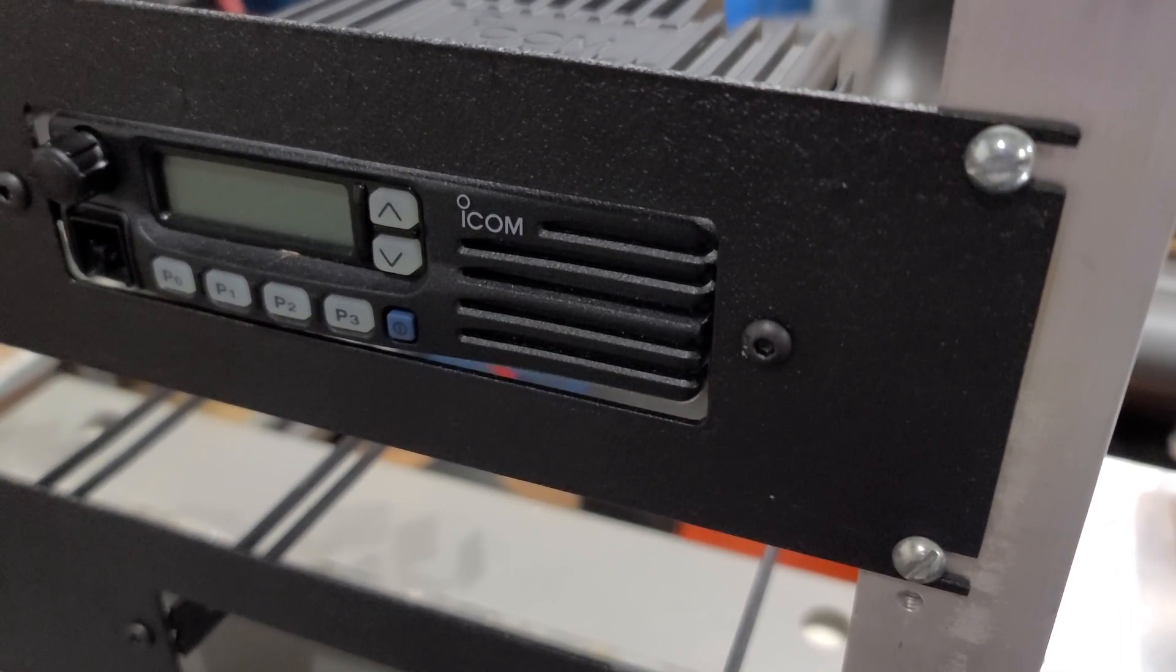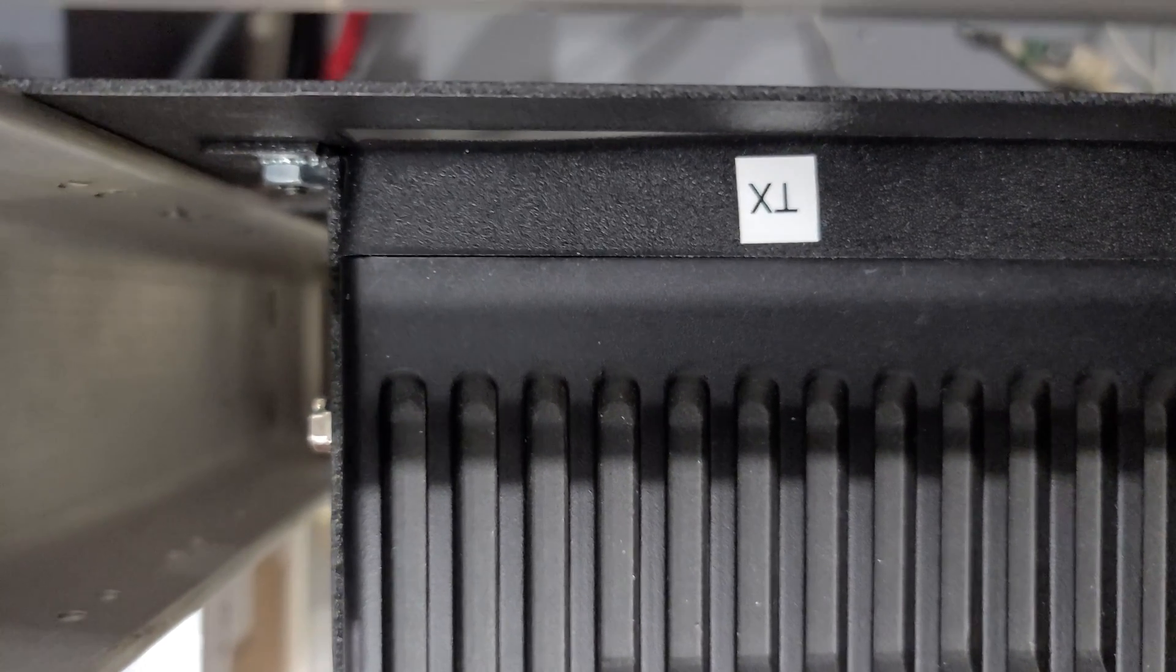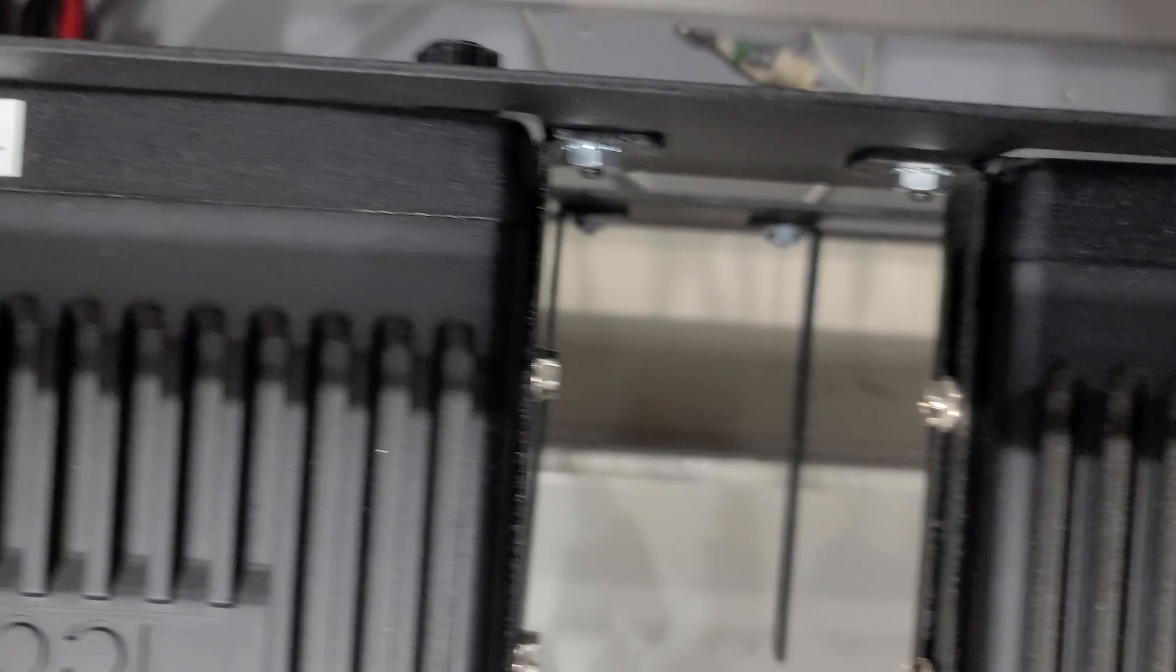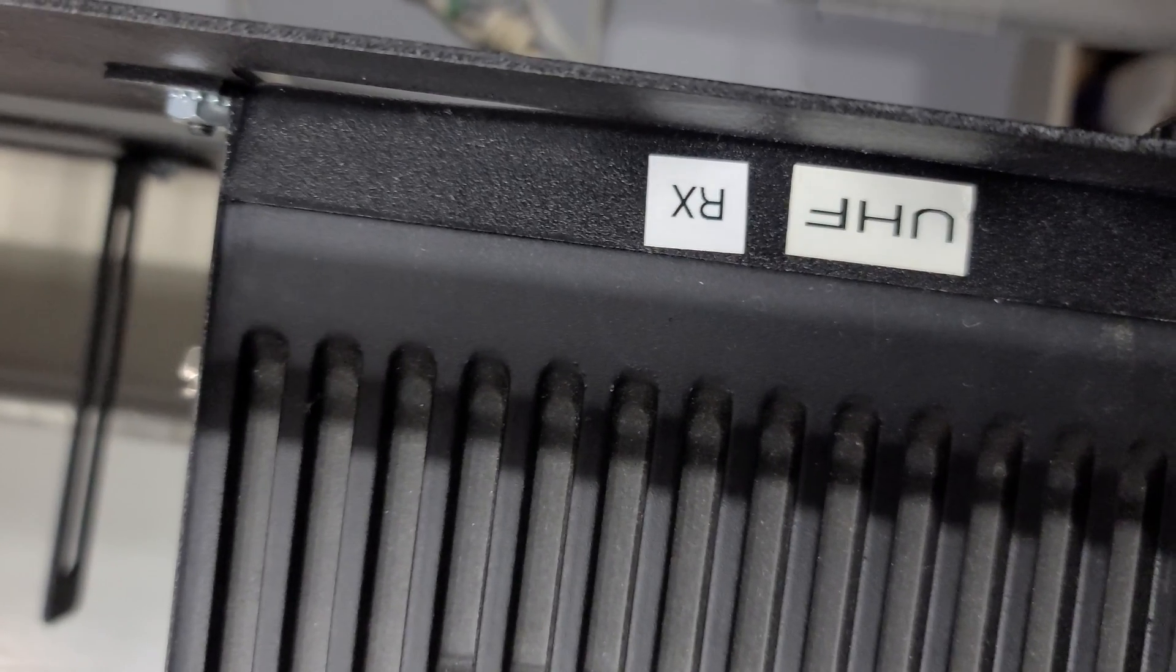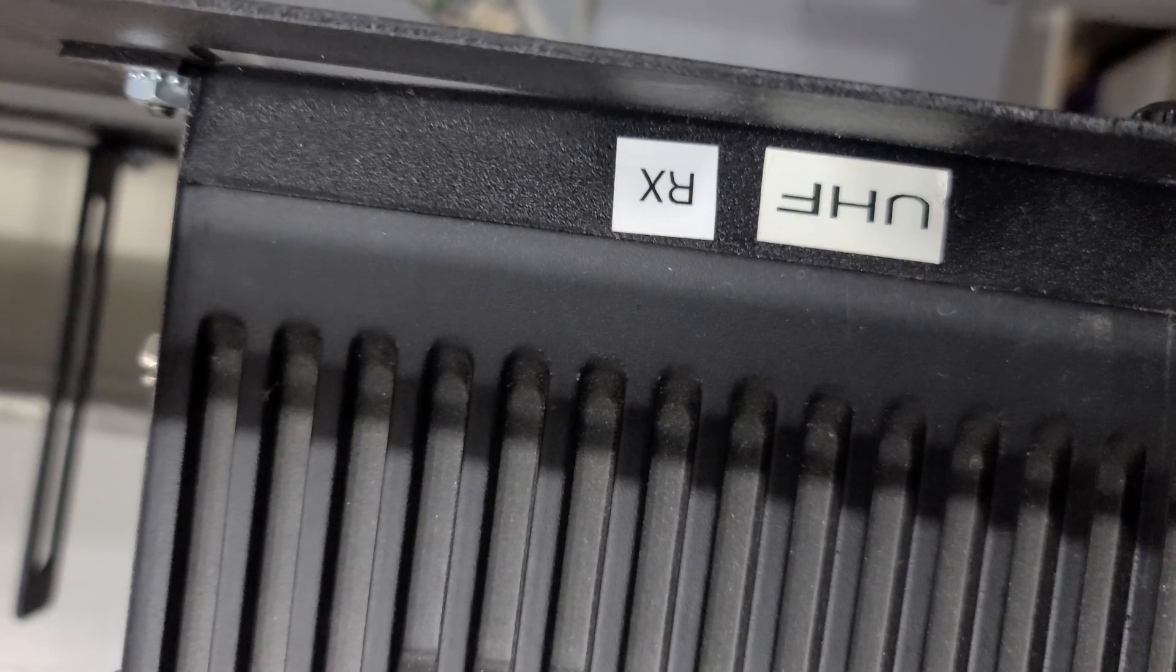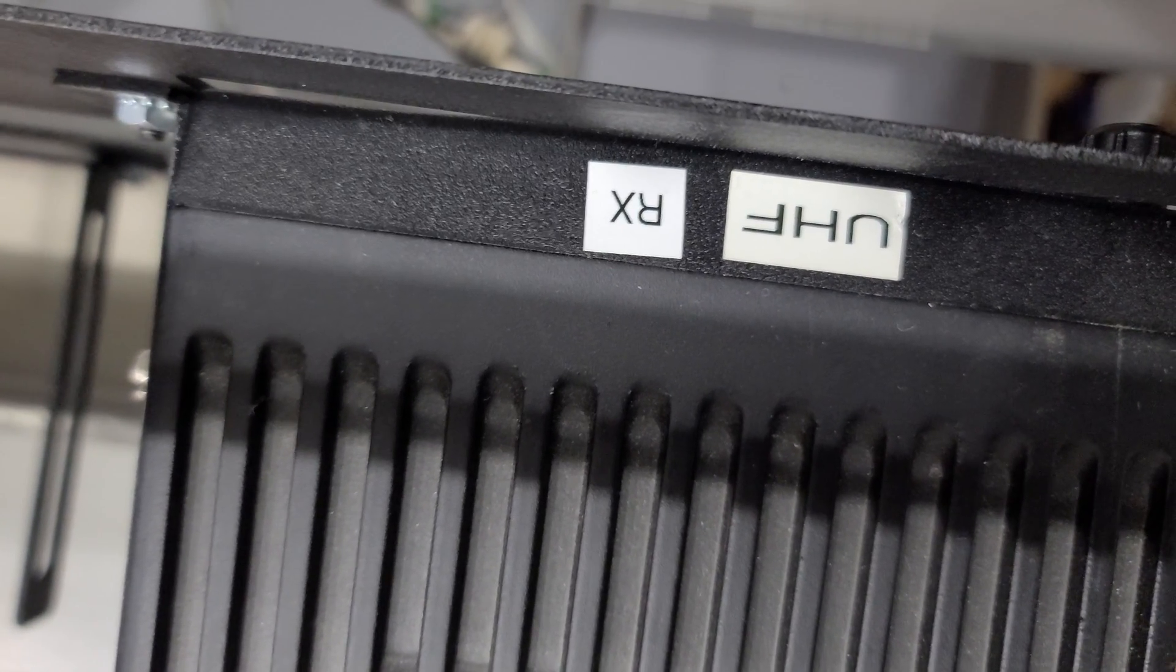Doesn't that look great? We've also labeled the radios for transmit and receive. That way we know which one is which, especially when we start connecting everything, which will be in the next video. We'll also be putting these labels on the front side of this panel so we can see them better.